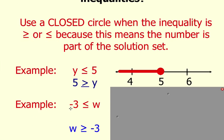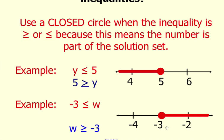We have negative 3 is less than or equal to w. Remember that the other way to express this inequality is to say w is greater than or equal to negative 3.